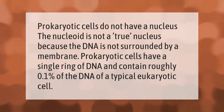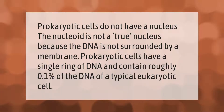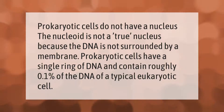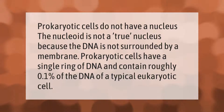Prokaryotic cells do not have a nucleus. The nucleoid is not a true nucleus because the DNA is not surrounded by a membrane. Prokaryotic cells have a single ring of DNA and contain roughly 0.1 of the DNA of a typical eukaryotic cell.